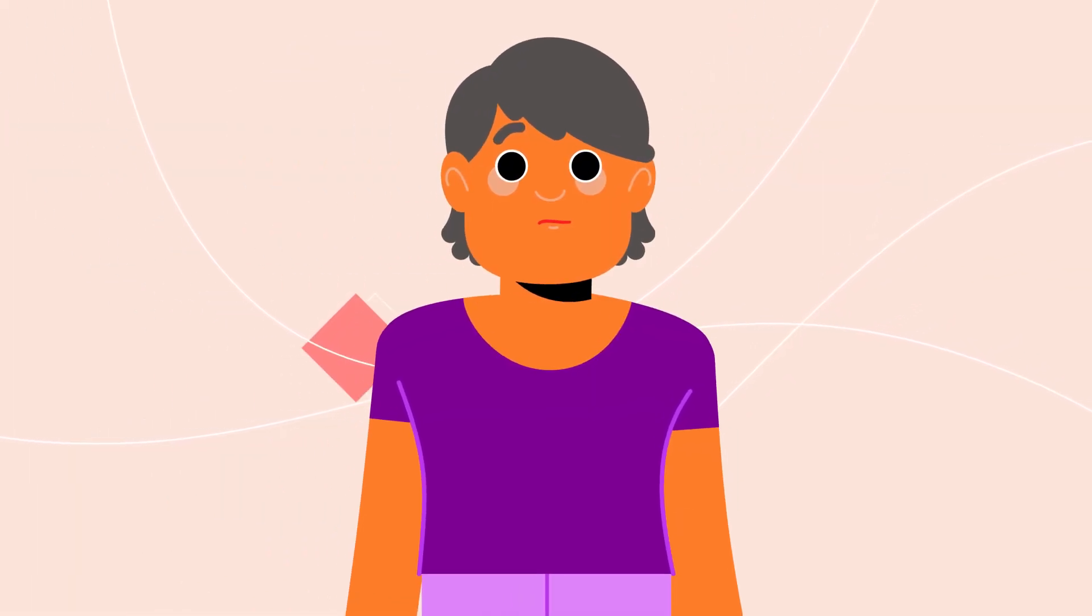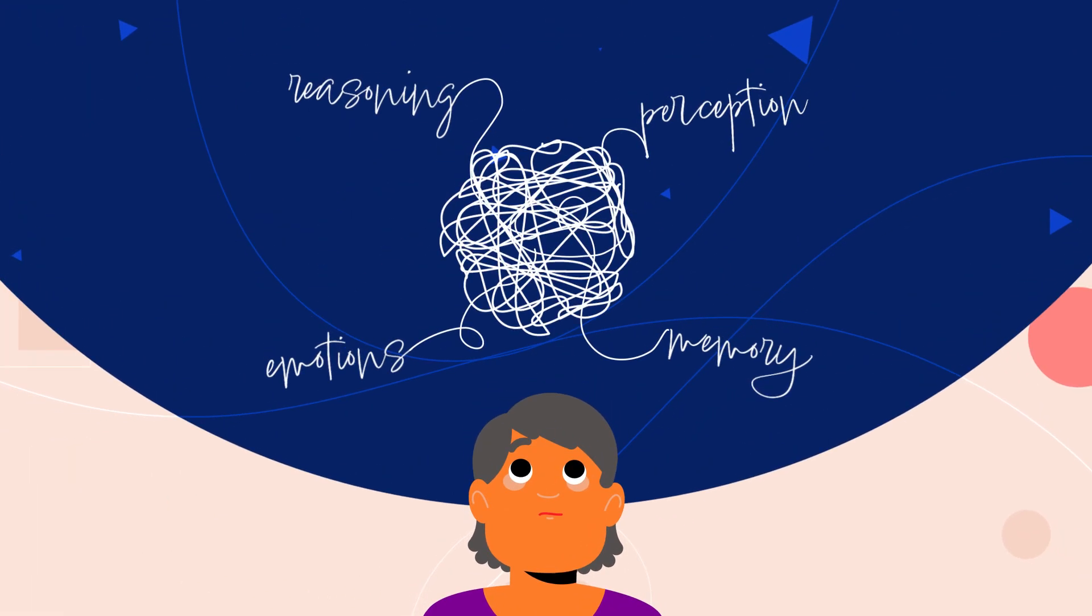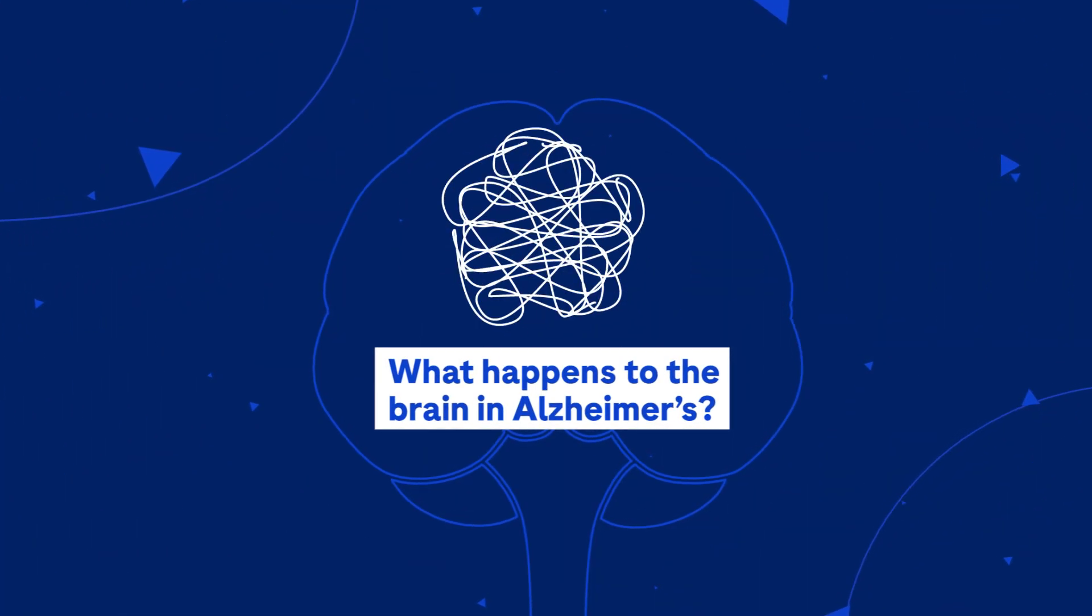Many people think the symptoms of Alzheimer's are a normal part of aging, but that's not the case. So, what happens to the brain in Alzheimer's?